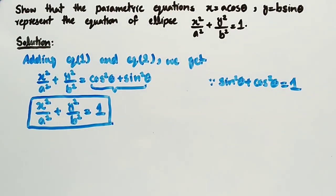Hence, we have showed that the parametric equations x = a·cos θ and y = b·sin θ represent the equation of the ellipse x²/a² + y²/b² = 1. Thank you.